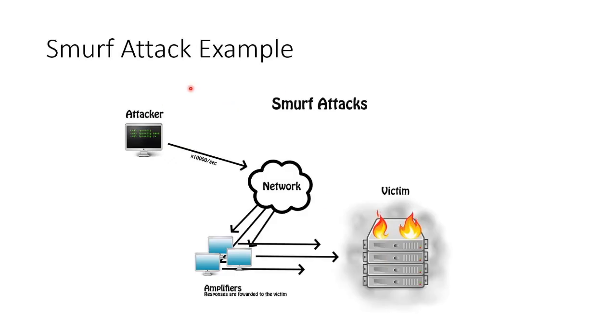Here's an example of a smurf attack. The attacker sends loads of pings to loads of servers on the internet, but the servers don't respond to the attacker — they think the requests came from the victim, so they all respond to the victim at once and basically overwhelm it. Those are some common types of denial of service attacks.